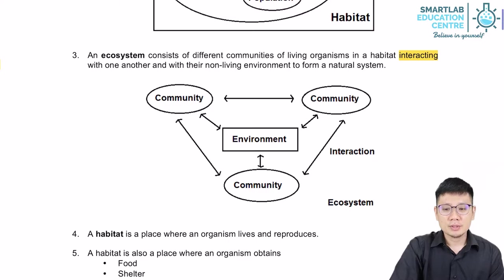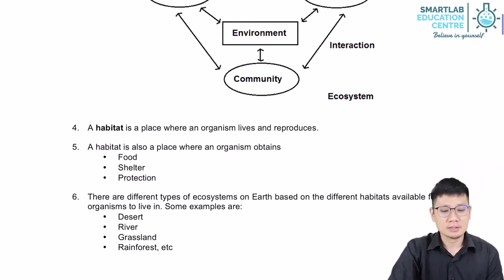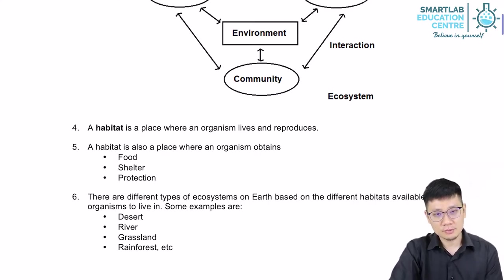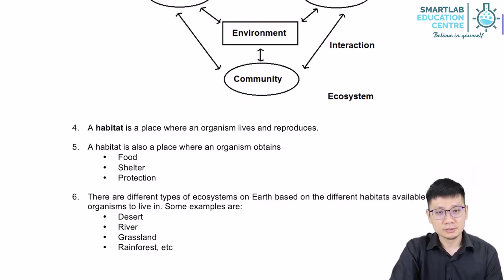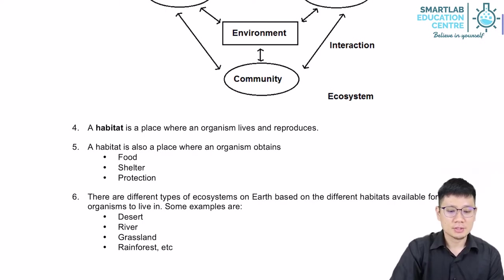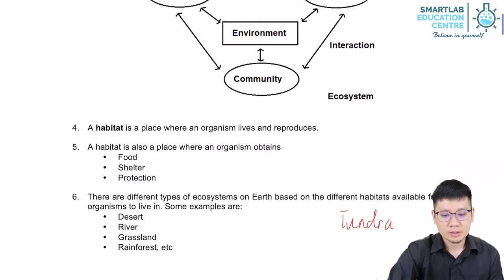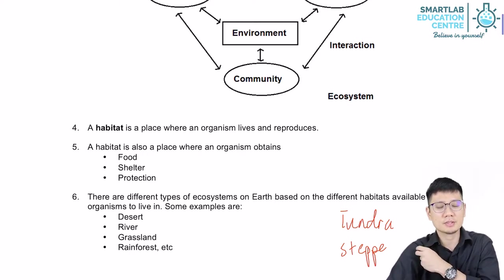Now let's briefly discuss a few different types of habitats. In general, habitats serve the function of a place to live in and also provide food and protection. There are many different kinds of habitats in this world. Common ones include deserts, rivers, grasslands, and rainforests. There are actually a lot more, for example tundras and steppes. There are a lot of other ecosystems in this world.